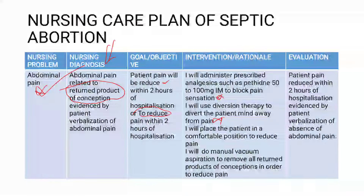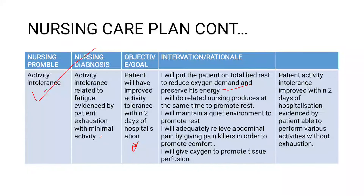Apart from that, you can talk about performing related procedures in blocks to promote rest, hence this will help conserve energy. You can also promote or maintain a quiet environment to promote rest. You can also perform abdominal compressions to reduce abdominal pain, or give painkillers to reduce abdominal pain as this will promote rest. In terms of evaluation, you can say patient's activity tolerance improved within two days of hospitalization.